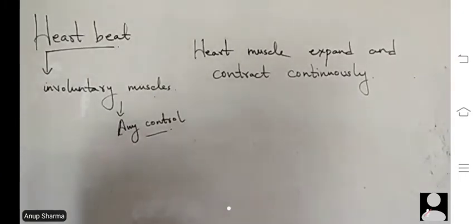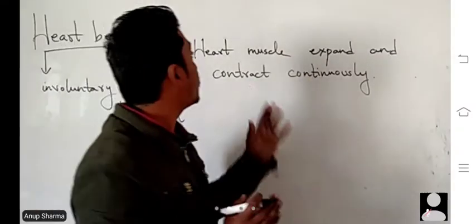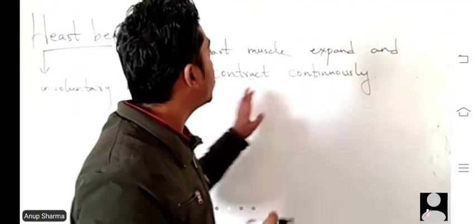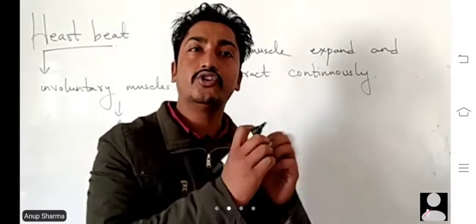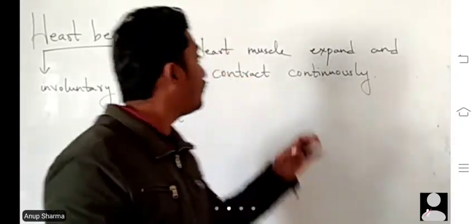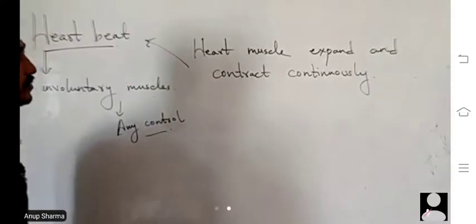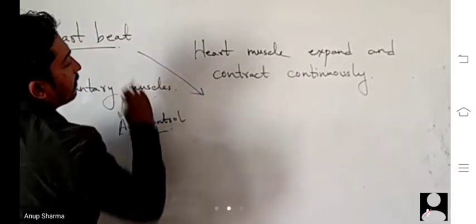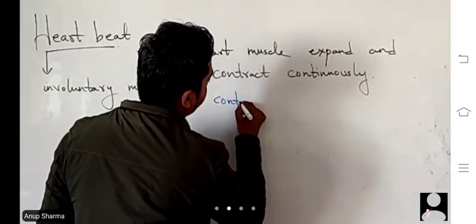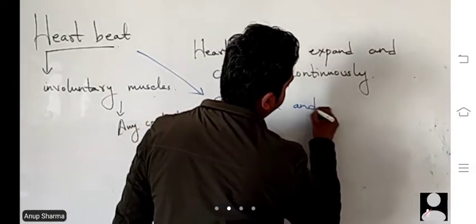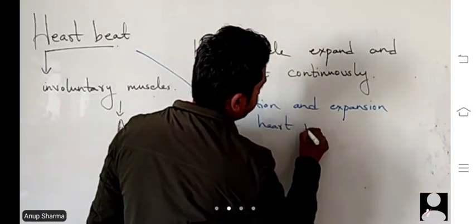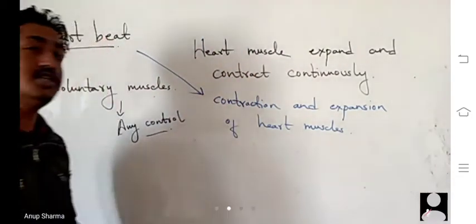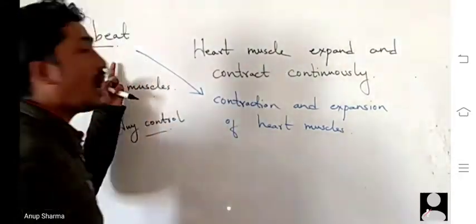The rhythmic contraction followed by expansion of the heart muscle constitutes a heartbeat. That means the rhythmic expansion and contraction of the heart muscle, which is a continuous process, is called heartbeat. So the rhythmic contraction and expansion of heart muscles is termed as heartbeat.